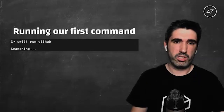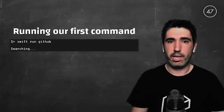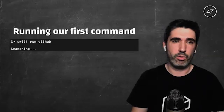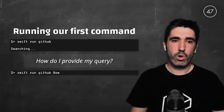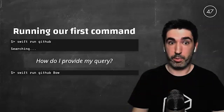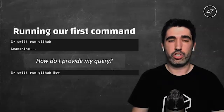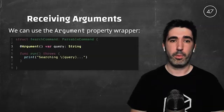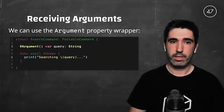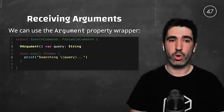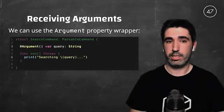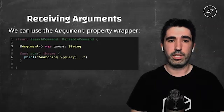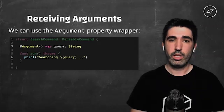However, this is not very useful because right now we are not passing any input from the outside, and the command can only print the same message over and over. To do something useful, like providing a query to search on GitHub, Swift Argument Parser provides a property wrapper called `@Argument`. We apply it to a field to indicate that whatever is passed in the invocation must be assigned to this field — in this case, `query` with type String. Then we refer to `query` in our run method as we do with any regular variable.